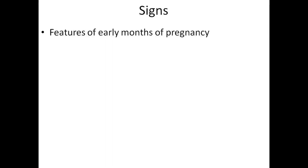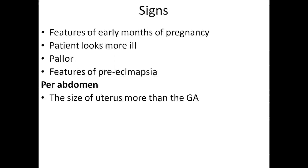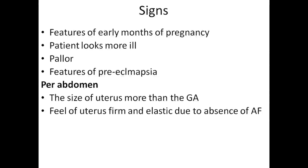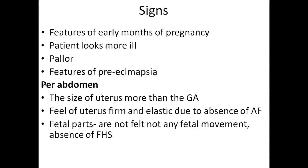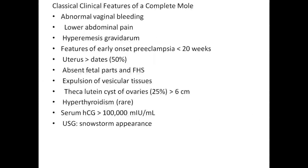Signs include features of early months of pregnancy; patient looks more ill; pallor; features of preeclampsia. On per abdomen examination, the size of the uterus is more than gestational age; the feel of the uterus is firm and elastic due to absence of amniotic fluid; fetal parts are not felt; no fetal movement; absence of fetal heart rate. Classical clinical features of complete mole include abnormal vaginal bleeding, lower abdominal pain, hyperemesis gravidarum, features of early onset preeclampsia, uterus more than dates, absence of fetal parts and fetal heart sound, expulsion of vesicle tissue, theca lutein cysts of ovaries, hyperthyroidism, serum HCG more than 1 lakh units, and USG snowstorm appearance.